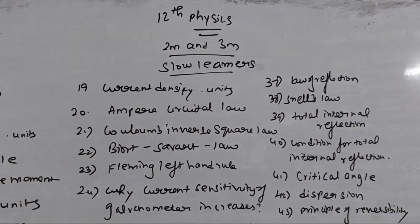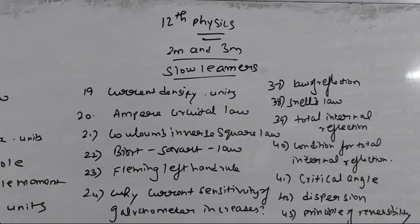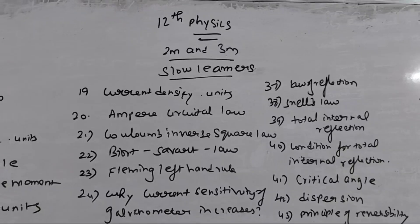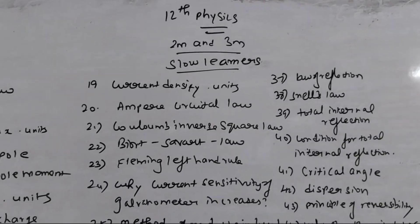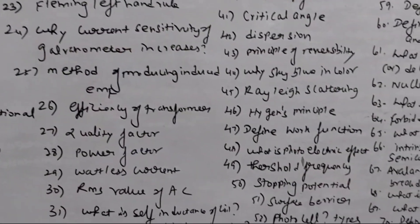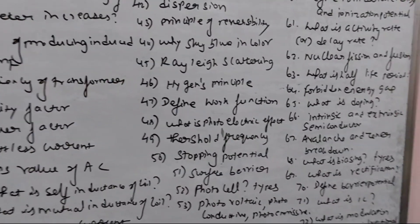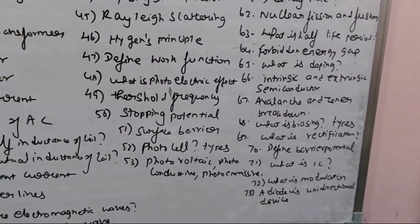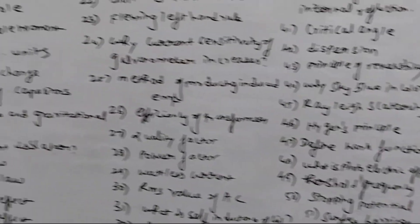Hi everyone. This is Cholthu Physics 2-mark and 3-mark for slow learners. Here are some questions that you can see. It's easy to see — it's got 73 questions.